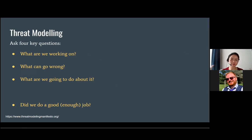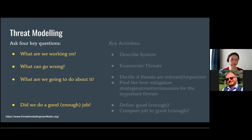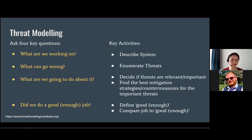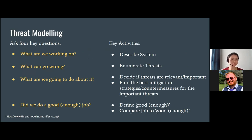All the methodologies and processes and diagrams ultimately distill down into these few points. We ask four key questions and do the corresponding activities: What are we working on? — describe the system. What can go wrong? — enumerate all the different threats. What are we going to do about it? — decide if the threats are even relevant and find the best mitigation strategies or countermeasures. And did we do a good enough job? — first define what "good enough" looks like, then compare our work to that standard and see if we should do something more.